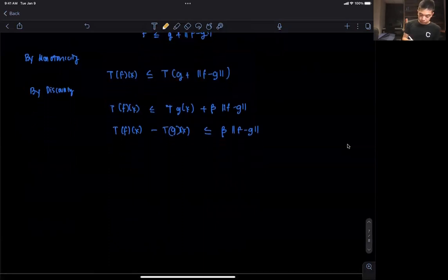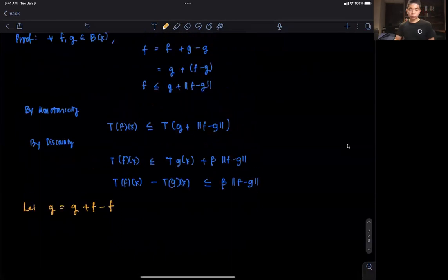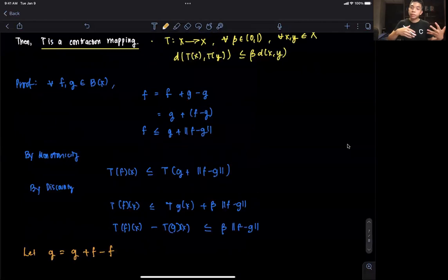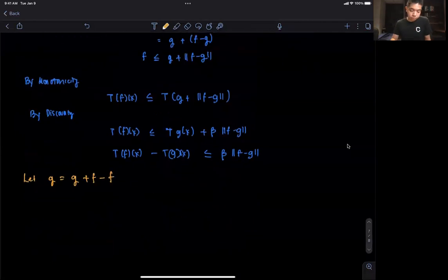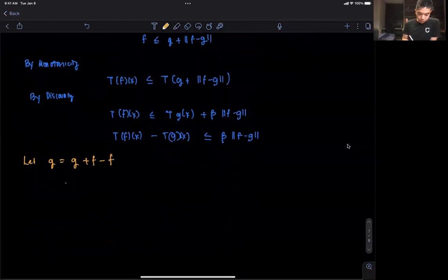Let g be equal to g now plus f minus f. We're basically going to repeat the procedure, but for the opposite side. In the first side we did f, now we'll do g. This is equal to f plus g minus f.